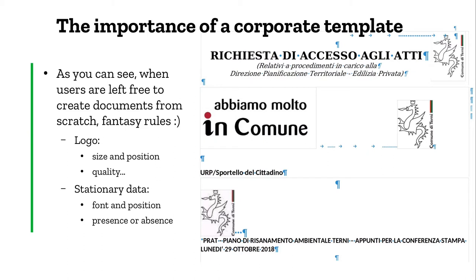In this case, we can see that regardless of the not proper use of word processing — spaces, tabs and whatever — the logo, for example, is every time different in size, position, and also quality. As you can see here, this one is really scaled and compressed. These are three different documents from the very same entity, which is my municipality, and they look so different. This is just because they probably don't have, or at least didn't use, a template.